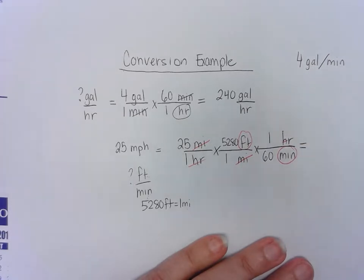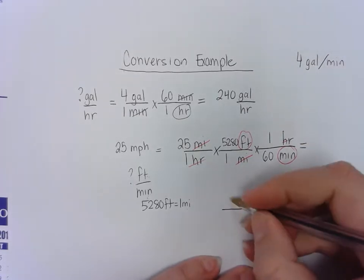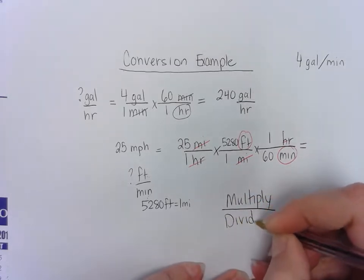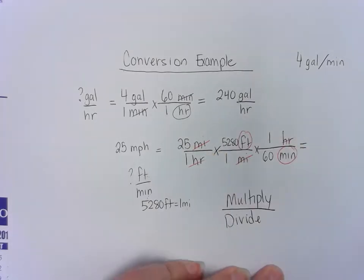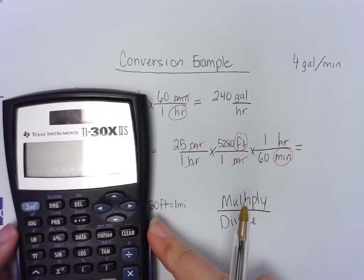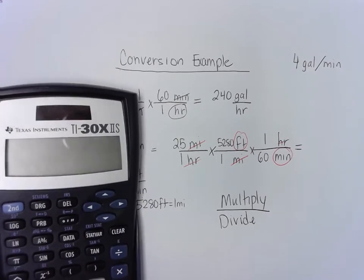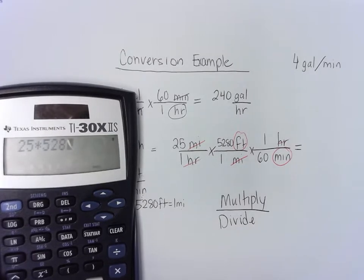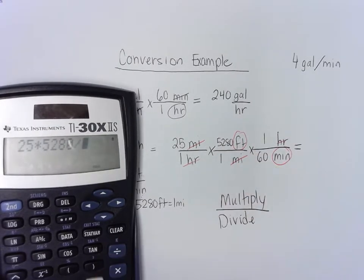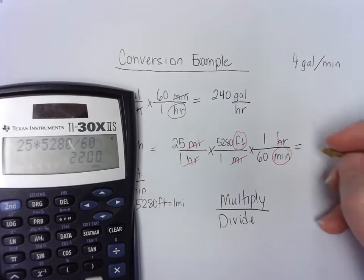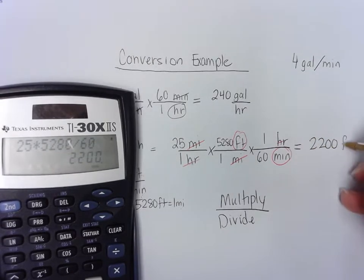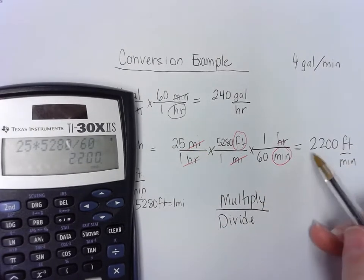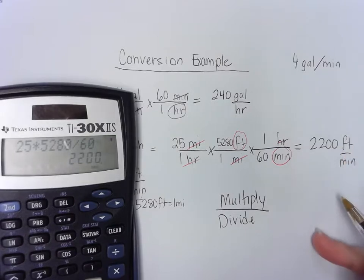In order to solve this problem, anything on the top, I am going to multiply by and anything on the bottom, I am going to divide by. So I am going to type into my calculator, 25 times 5,280 divided by 60. And I will get an answer of 2200. And this is feet per minute. If I'm driving 25 miles per hour, that's 2,200 feet per minute.